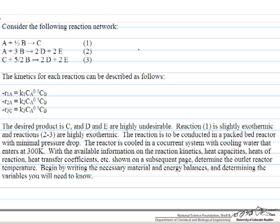First we set up the problem, which means setting up balances. We are going to ignore pressure drop but will not assume isothermal operation, so we will need to set up both an energy balance and material balances for all our reactants and products. The reaction network is given here — it is based on a real example of ethylene epoxidation, where A is ethylene, B is oxygen, C is ethylene oxide, and D and E are carbon dioxide and water.